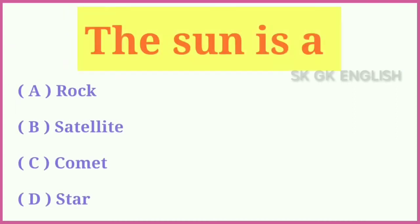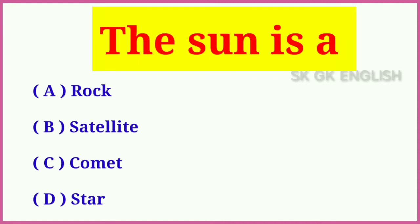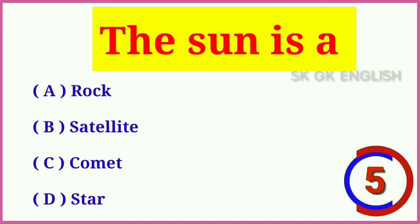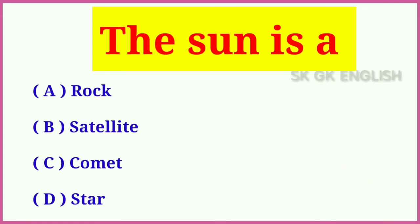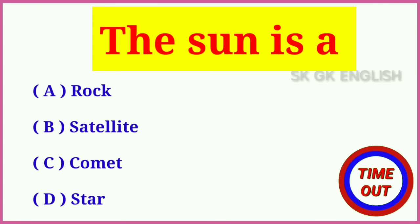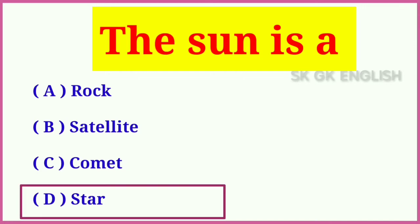Question number five: The sun is a what? Options are: A. Rock, B. Satellite, C. Comet, D. Star. Correct answer is D. Star.